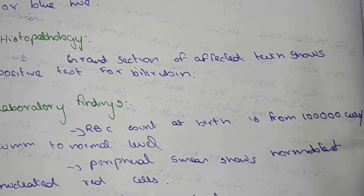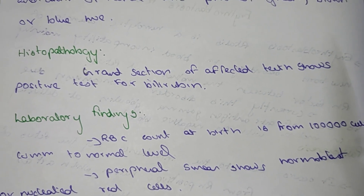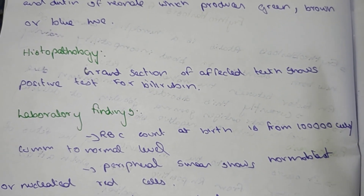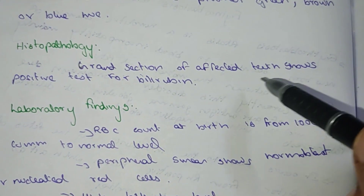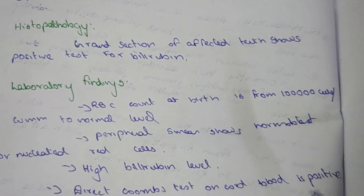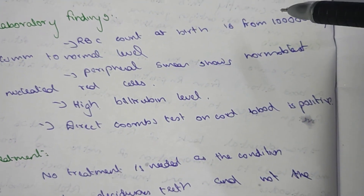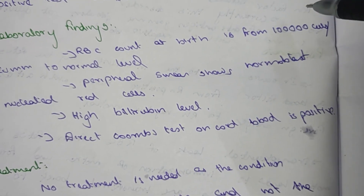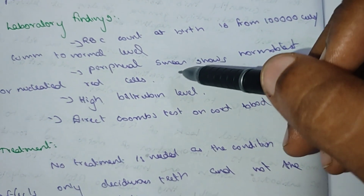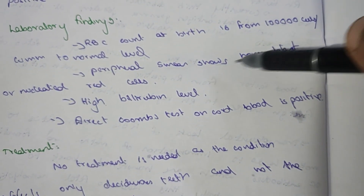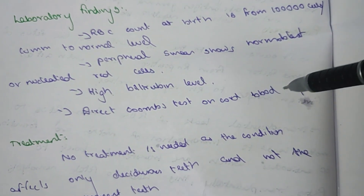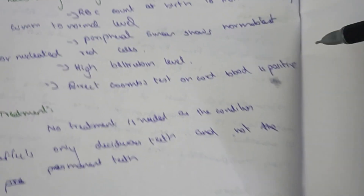Histopathology: a ground section of affected teeth shows a positive test for bilirubin. Laboratory findings include an RBC count at birth of around 1 lakh cells compared to normal levels. Peripheral smear shows normoblasts and nucleated red cells. High bilirubin level is present, and a direct Coombs test on cord blood is positive.